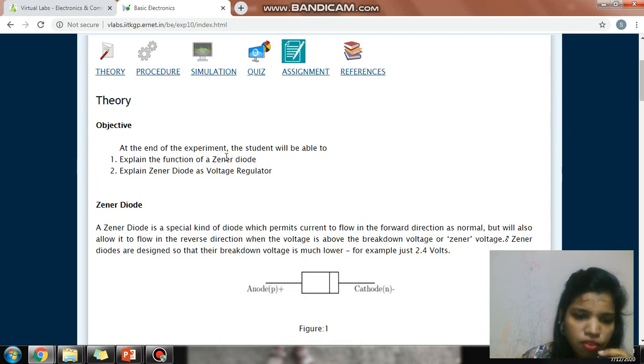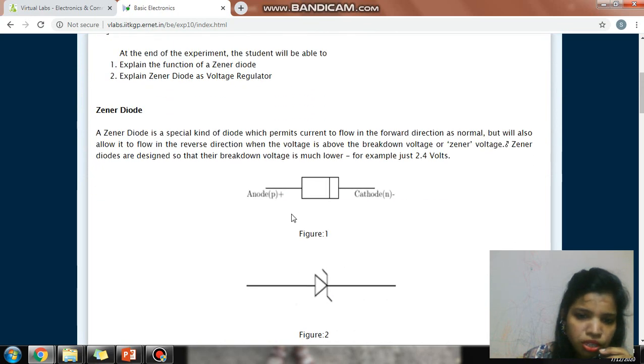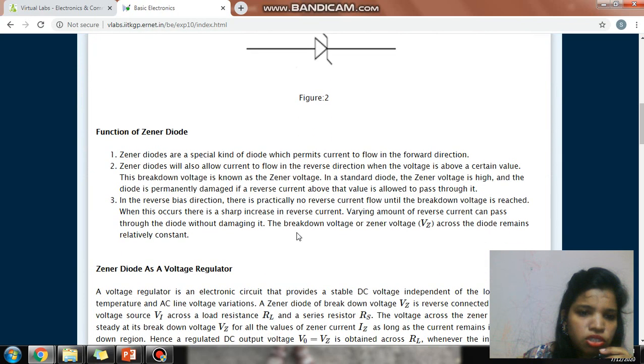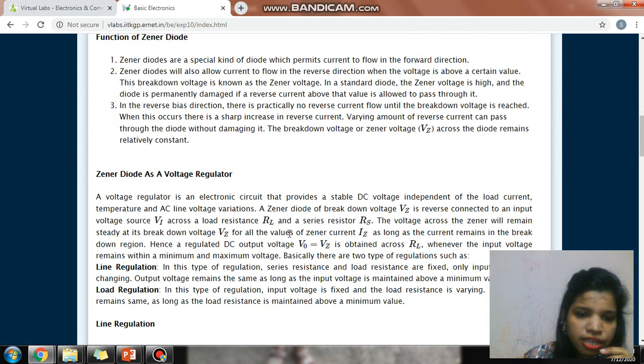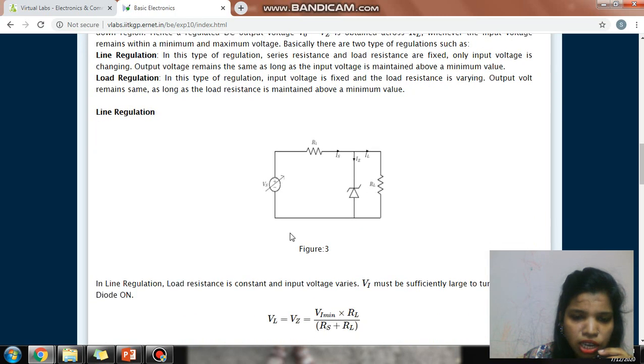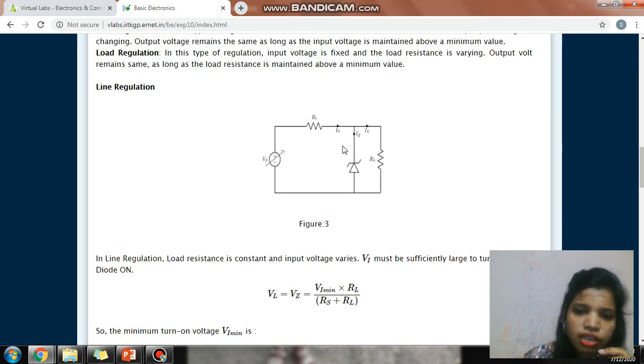First, theory is given here. As we know, the Zener diode in forward bias behaves like a normal PN junction diode, but in reverse bias it also allows current to flow after breakdown voltage.